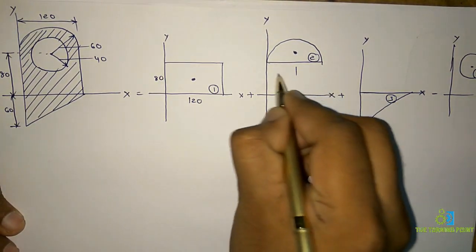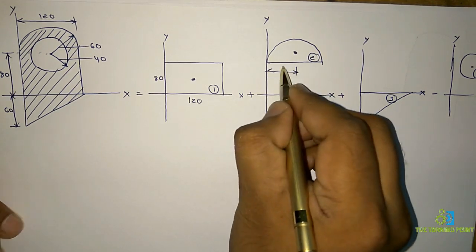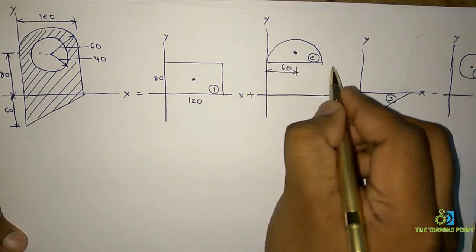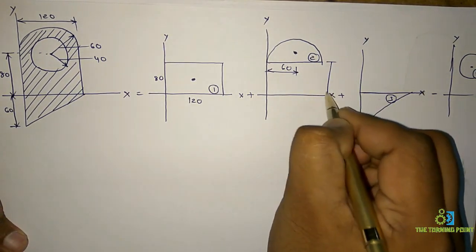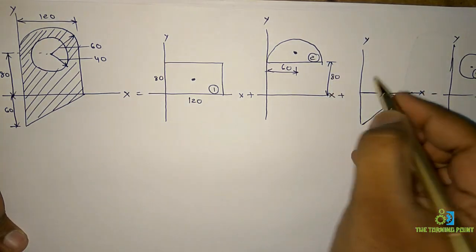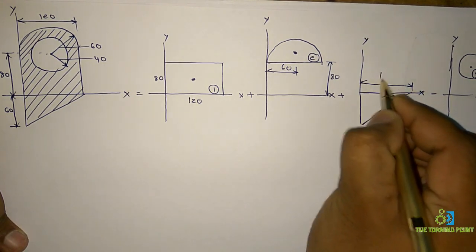The radius of this semicircle is 60, this height is 80, and the base of this triangle is 120.